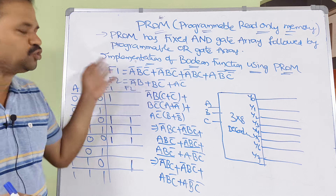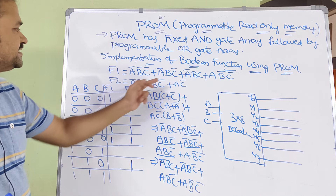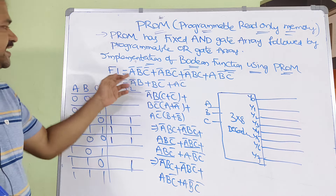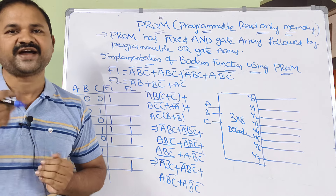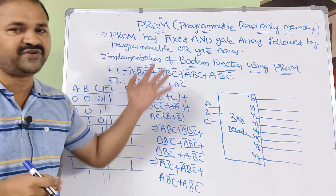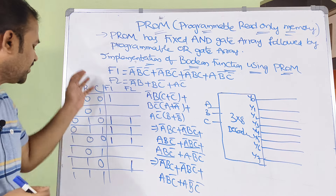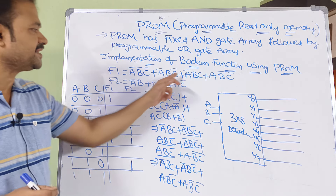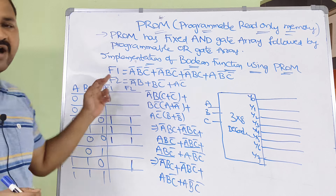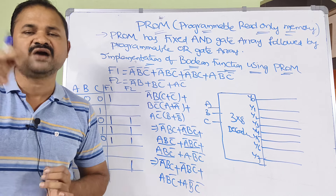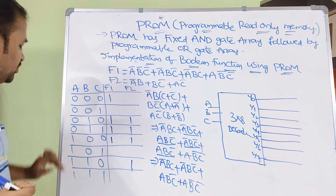Let's say we have two functions, F1 and F2. First let us evaluate F1 and find its minterms. For that purpose we have drawn the truth table. The inputs are A, B, C — three inputs — so we will have 2 to the power 3, that is 8 combinations from 0 to 7.